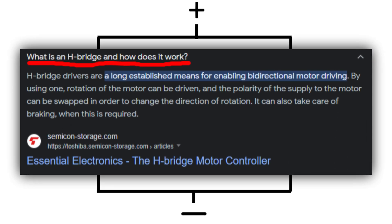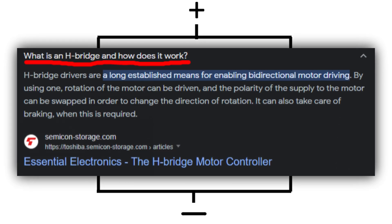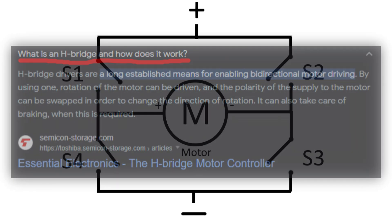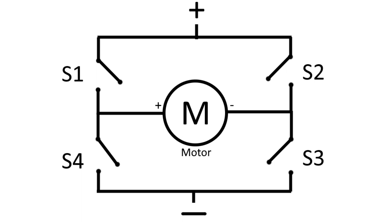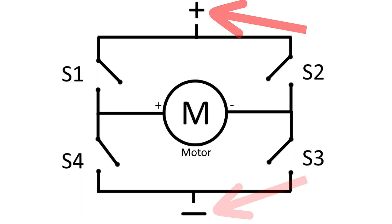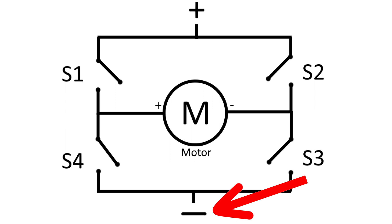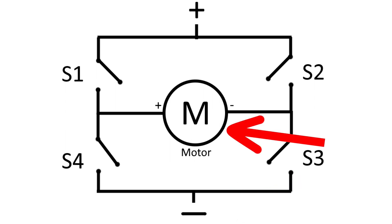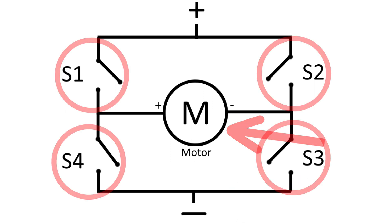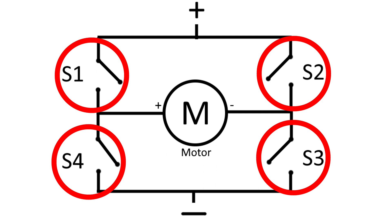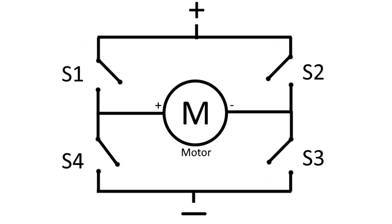An H-Bridge is a special type of circuit that allows a motor to rotate in both directions. In a simple schematic: the top is the positive terminal of the battery, the bottom is the negative terminal or ground, the M in the middle is the motor, and the components on the sides are switches labeled S1, S2, S3, and S4. These switches can be any type — buttons, transistors, or any kind of switch. You can probably see why the circuit is called an H-Bridge: it has the shape of an H.